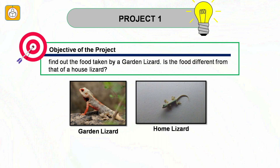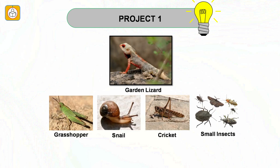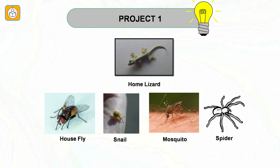Project number one: Find out the food taken by a garden lizard and a house lizard. A garden lizard feeds on grasshoppers, snails, crickets and other small insects found in the garden, whereas a home lizard feeds on houseflies, small snails, mosquitoes and spiders. There is a difference between the two — the garden lizard, being larger and staying outside, feeds on larger insects, while the home lizard feeds on smaller insects found inside the house.